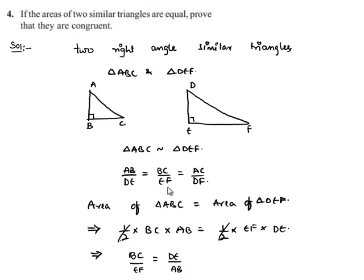So here we have BC by EF is equal to AB by DE from similarity, and BC by EF we got it as DE by AB. Let us equate them, then we get AB by DE is equal to DE by AB. That implies AB by DE is equal to 1, which means AB is equal to DE.